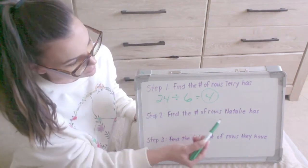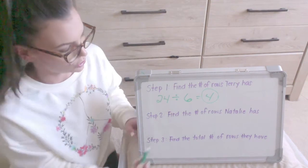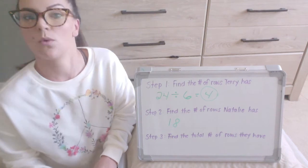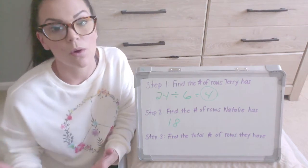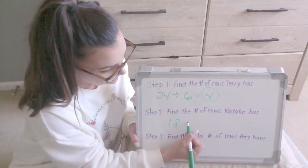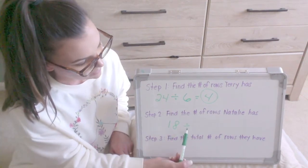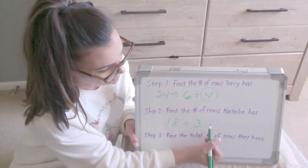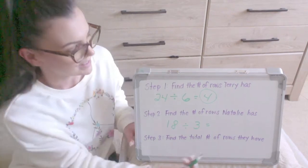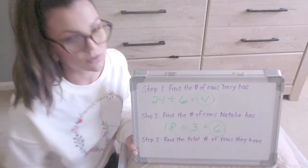Now we're going to find the number of rows Natalie has. In the problem it says Natalie has 18 cars, and she's also splitting them up into equal groups — she's putting them into rows of three. When I put things into equal groups, that means I am dividing. 18 divided by three is six. So Natalie has six rows.